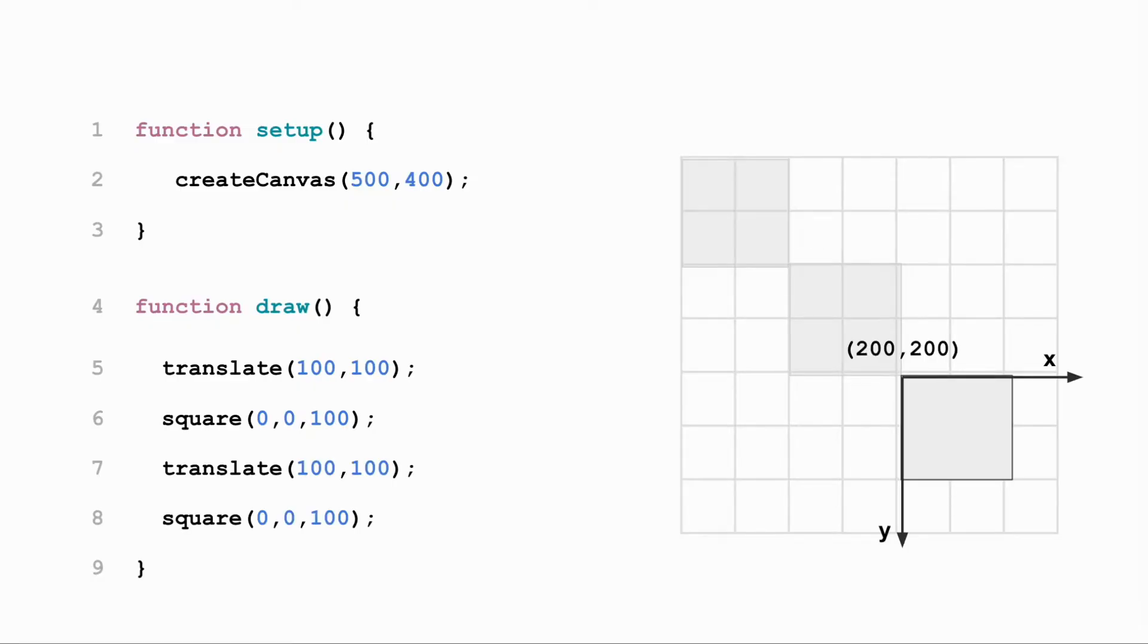If the translate function is called more than once, the origin will be shifted again. For example, if translate 100,100 is called after translate 100,100, it will shift the origin 100 pixels to the right and 100 pixels down from the shifted origin. Therefore, the new origin will be located at 200,200.